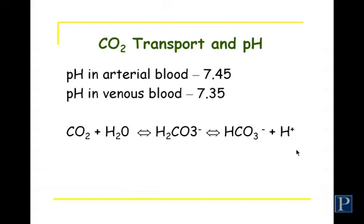One way the body compensates for metabolic acidosis is the bicarbonate buffer system: bicarbonate in the blood combines with those excess hydrogen ions, providing quick protection for tissues from the acidic pH. Another compensatory mechanism is increasing the breathing rate to blow off more CO2, which effectively removes hydrogen ions from the blood.